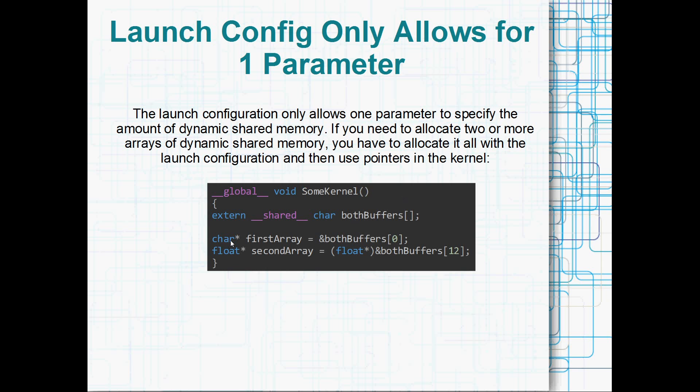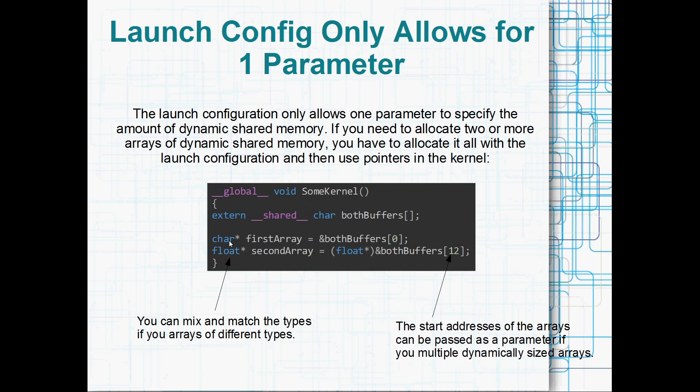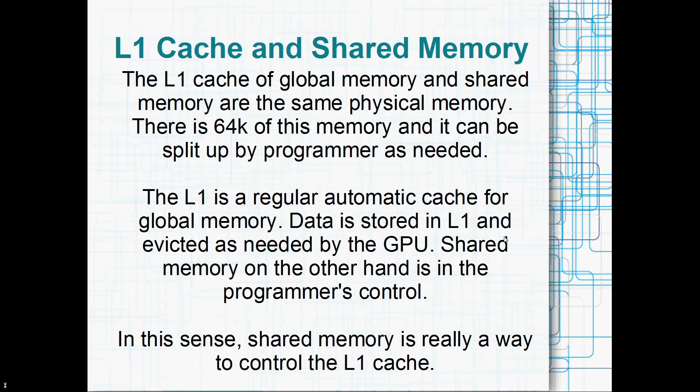But then you can use pointers to split that array up however you like. So right here I've got a bit of an example. I've got the first characters in that char array are used as a character array, but then exactly the same buffer you can use later characters, or 12 bytes and above, as say a floating point array if you want. Yeah, it's just an idea. In this video you can also, if you like, pass variables to your kernel which specify the start and end of the array, if you need to. Yeah, it's up to you.